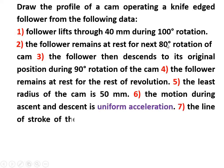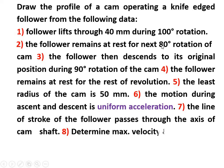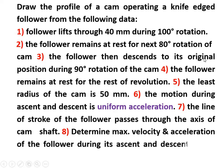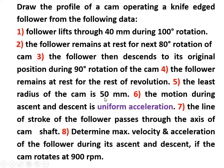The follower remains at rest for the next 80 degrees rotation of cam — this is the dwell period. The follower then descends to its original position during 90 degrees rotation of the cam — this is the descent angle. The follower remains at rest for the rest of the revolution — that is the next dwell period. The least radius of the cam is 50 mm, sometimes known as the base radius.